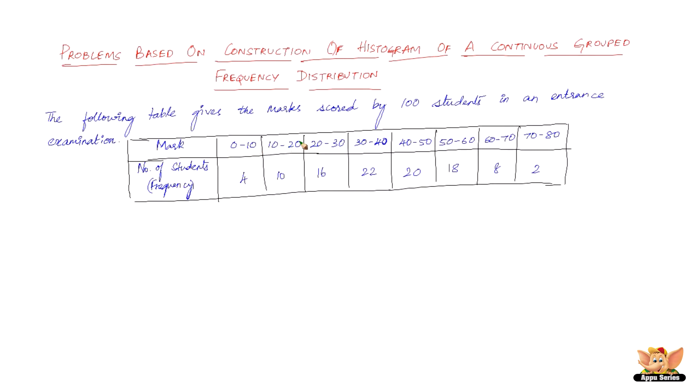0 to 10, 10 to 20, 20 to 30, 30 to 40, 40 to 50, 50 to 60, 60 to 70, and 70 to 80. That says that 0 is the least and 80 is the max marks. And the number of students being 4 for 0 to 10, 10 for 10 to 20, and so on.